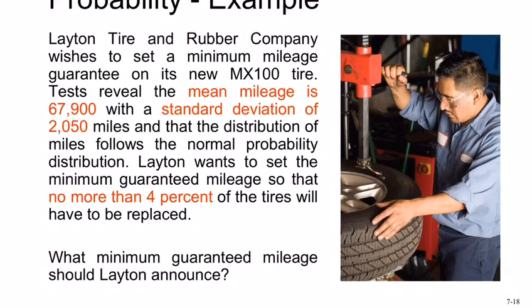You see they already give the probability - no more than 4%, that's 0.04. This 0.04 is the probability that you will find under the Z-distribution. Remember, last time they gave you x and based on x you found the Z and probability. Now you're going backward - they give you probability, you have to find the Z and you have to find the x. They ask you what minimum guarantee mileage should Layton announce - find the x now.